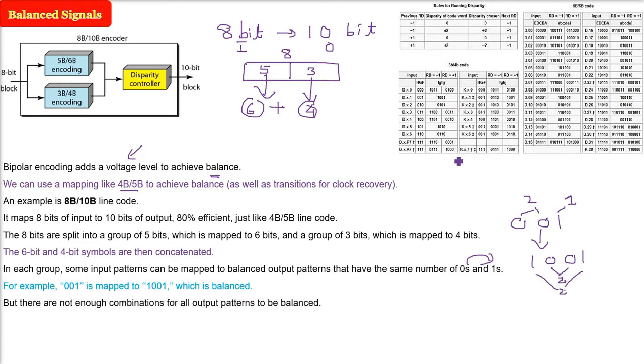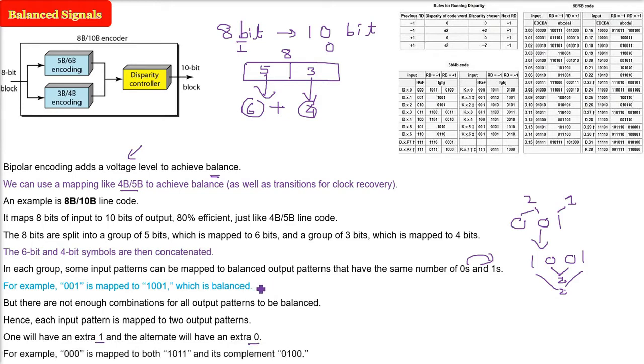Since we don't have enough combinations for all output patterns to balance them with equal numbers of 1s and 0s, each input pattern will be mapped to two output patterns. One will have an extra 1 and the alternate will have an extra 0.